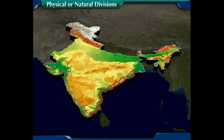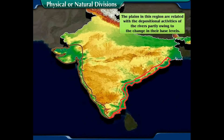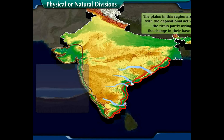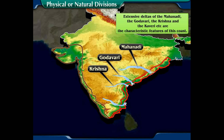Characteristics of the eastern coastal plain: Number one, the plains in this region are related to the depositional activities of the rivers, partly owing to changes in their base levels. Number two, extensive deltas of the Mahanadi, the Godavari, the Krishna, and the Kaveri are the characteristic features of this coast.